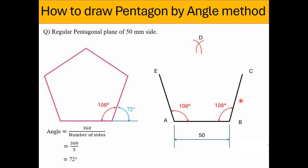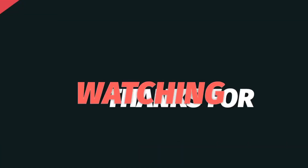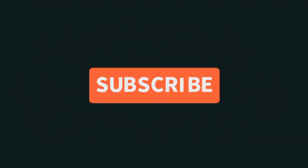With the help of a scale, we join point C to D — that is the fourth side of the pentagonal plane — and E to D, which is the fifth and last side. So this is the basic procedure to draw the pentagonal plane using the angle method. Either we can use 108 or 72 degrees. Thank you very much.